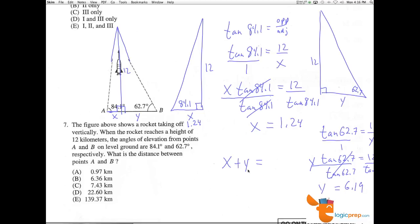So what is X plus Y? Well, Y is equal to 6.19 and X is equal to 1.24. So 1.24 plus 6.19 equals approximately 7.43. Answer choice C here.